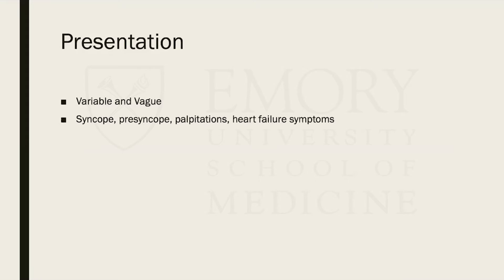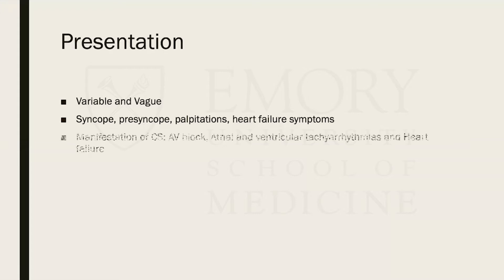Imaging studies have found asymptomatic cardiac involvement in 3.7 to 54.9% of patients. The wide range is likely related to patient selection, imaging technique, and protocols used. Of all patients with sarcoidosis, those with cardiac involvement have the worst prognosis. The presentation is very vague — ranging from syncope, presyncope, palpitations, or heart failure symptoms — typically as a manifestation of AV block, atrial and ventricular arrhythmias, and heart failure.